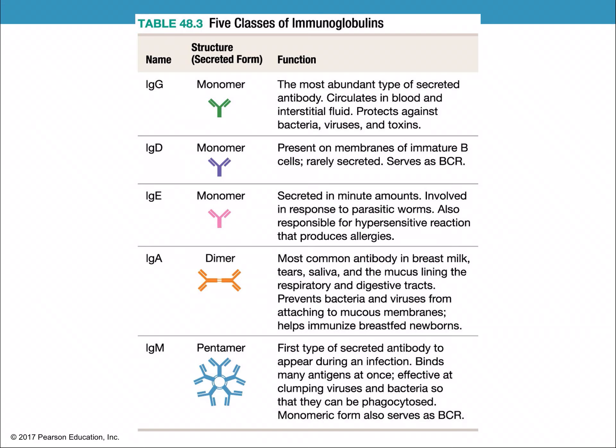IgE is secreted in minute amounts — elevated IgE levels signal that you have a parasitic worm, and that's what a blood test would look for. IgA is the most common antibody in breast milk, tears, saliva, mucus, and lining of the respiratory tract. IgM — a pentamer in structure — is the first type of antibody to appear in an infection. It binds to antigens at once and is effective at clumping viruses and bacteria so they can be phagocytized.